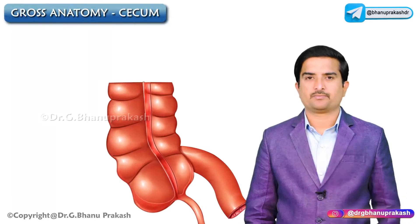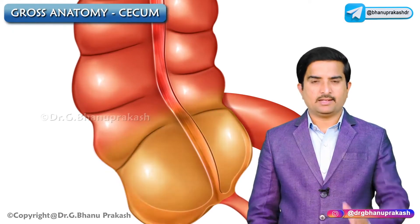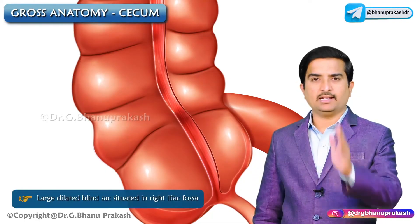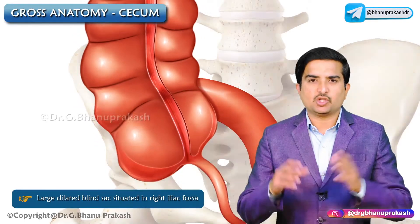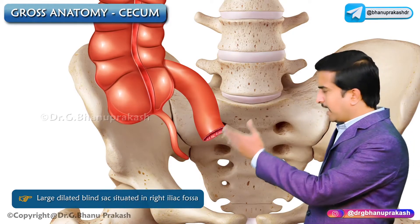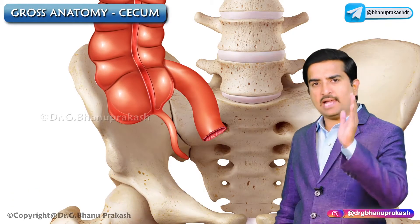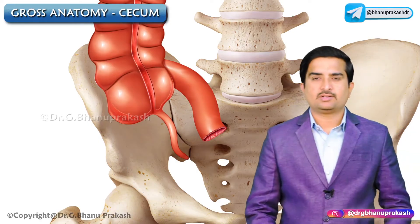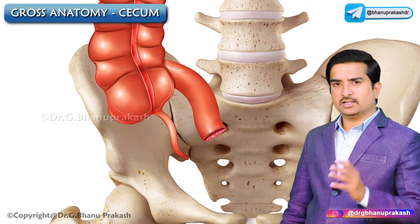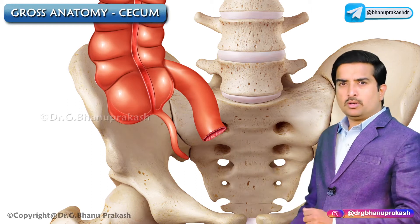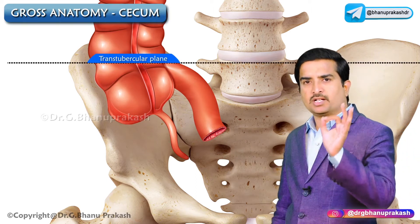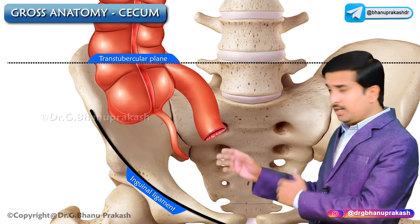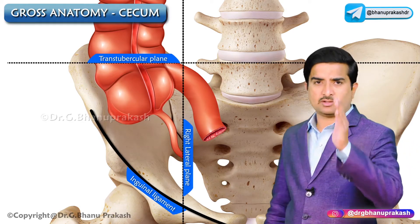The cecum is the commencement of the large intestine and is the large dilated blind sac situated in the right iliac fossa, above the lateral half of the inguinal ligament. The cecum occupies a triangular area bounded above by the transtubercular plane, below by the inguinal ligament, and medially by the right lateral plane.